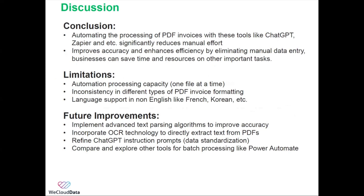In conclusion, automating the process of PDF invoices with generative AI tools like ChatGPT and Zapier significantly reduces manual effort and improves accuracy and efficiency by eliminating manual data entry, so businesses can save time and resources for other important tasks. A limitation is that this workflow has an automation processing capacity — it can only process one PDF file at a time. Also, my input data had a consistent PDF invoice format, but it would be difficult to handle inconsistent formats from different companies or merchants.